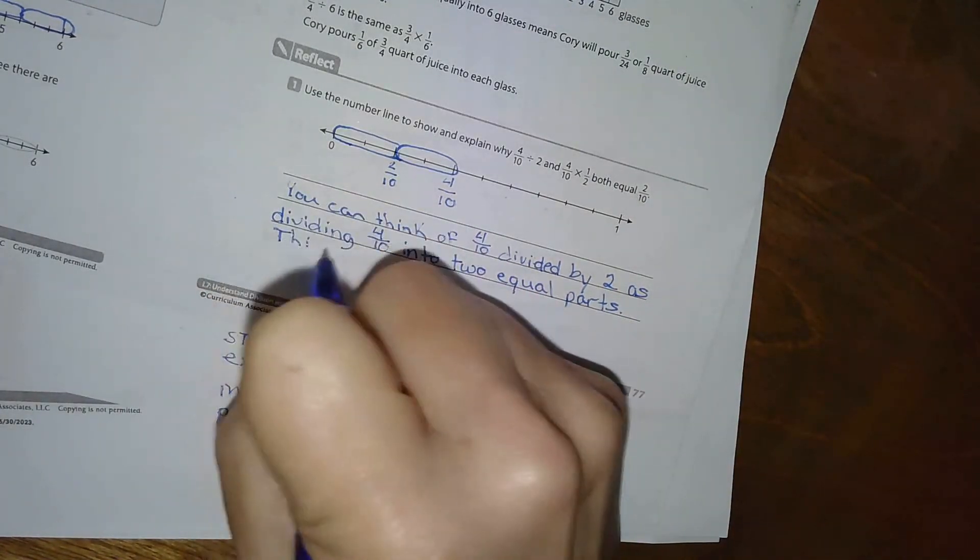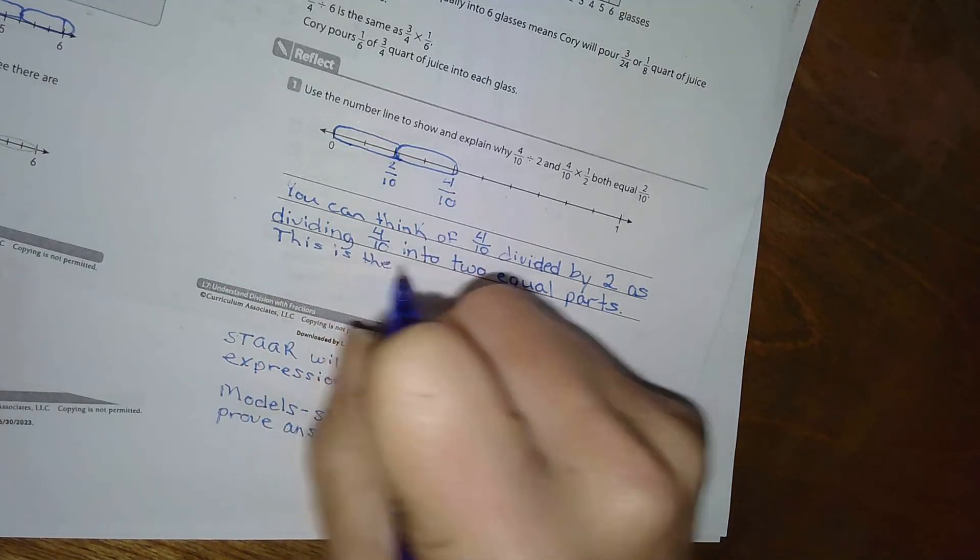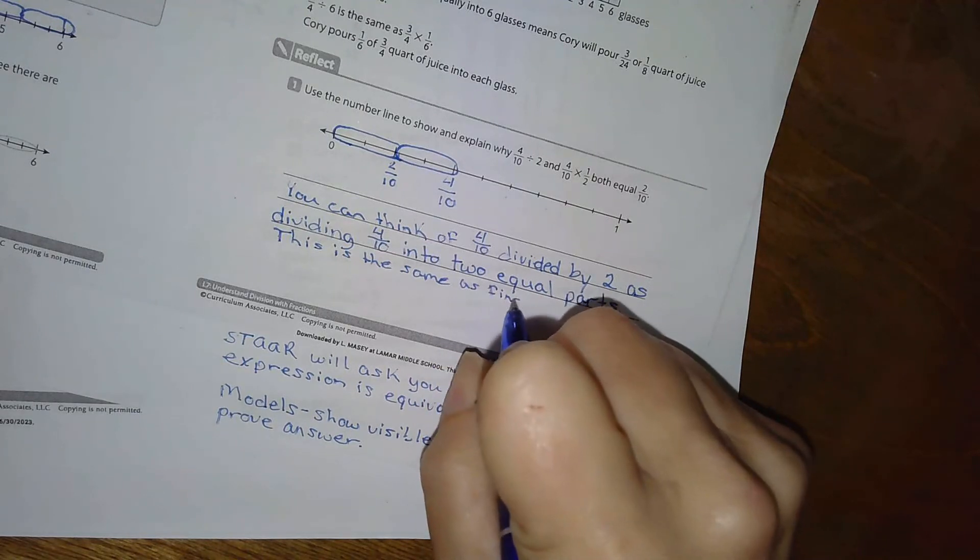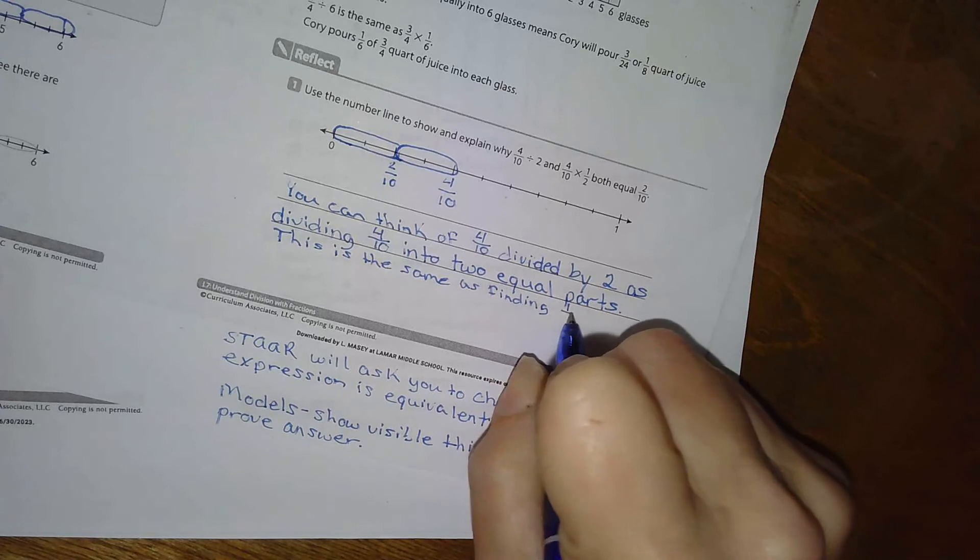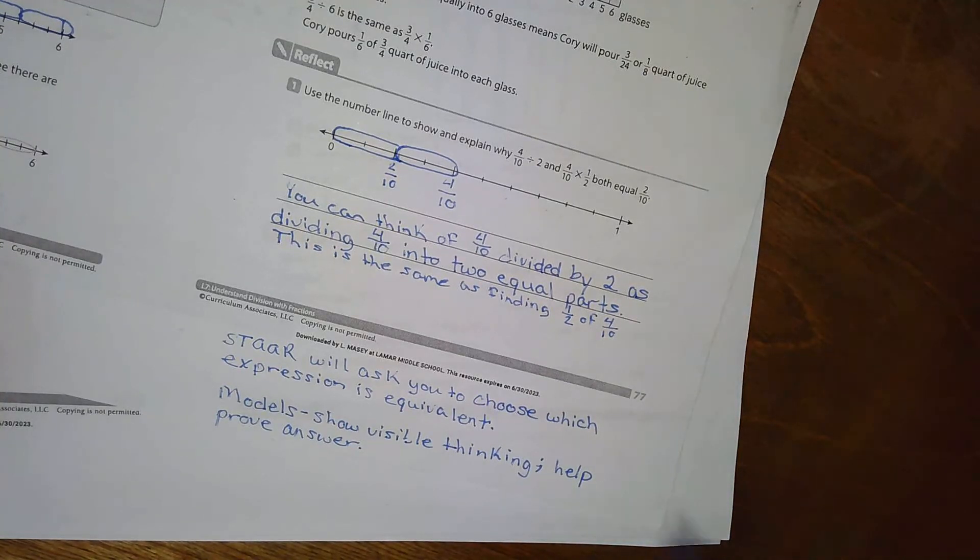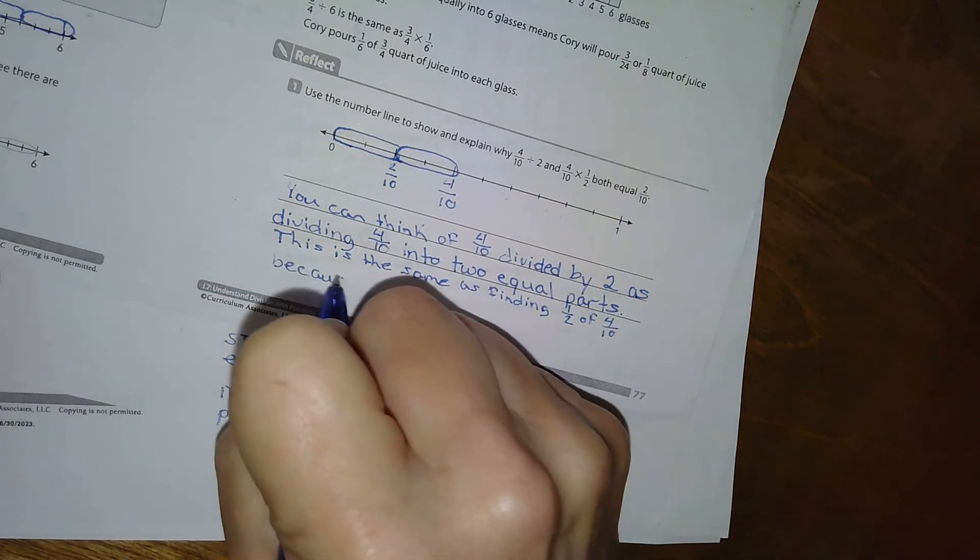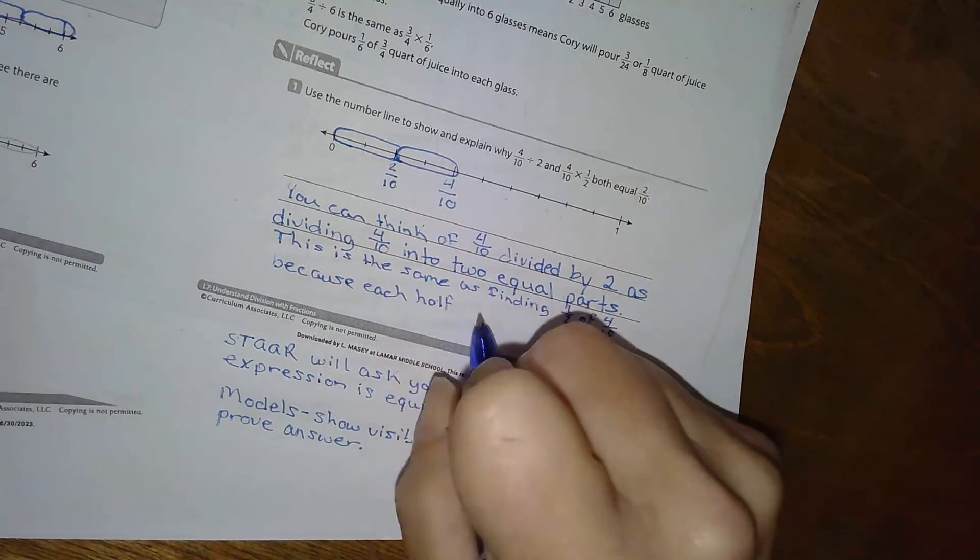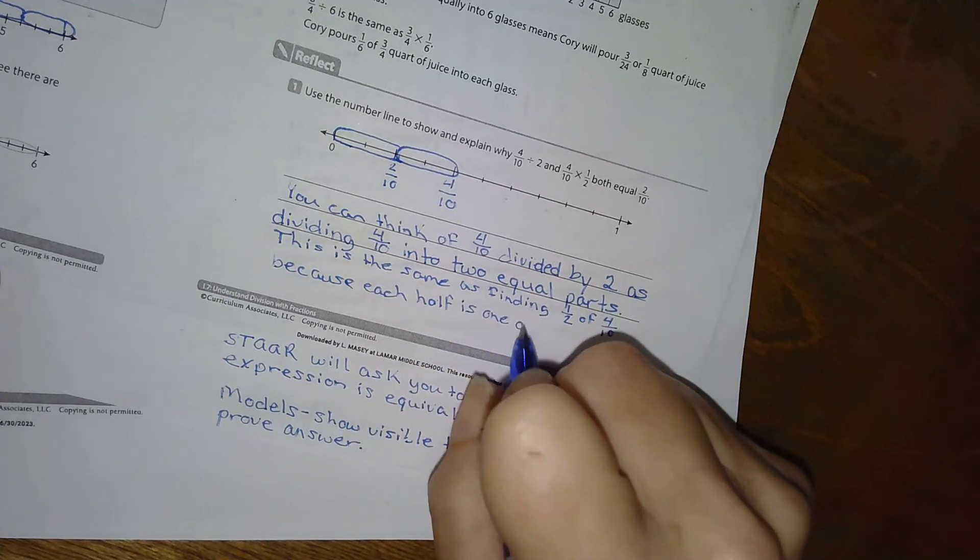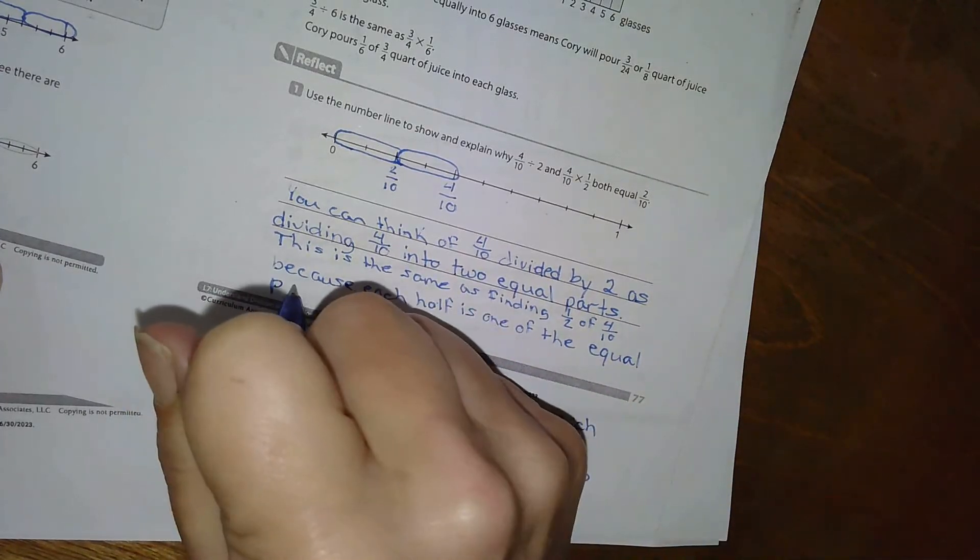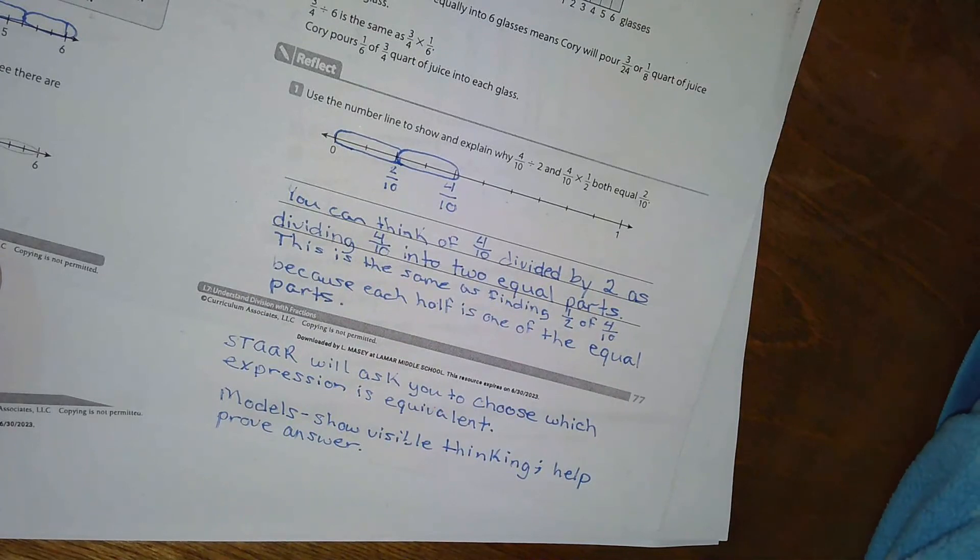Okay, this is the same as finding one-half of four-tenths because each half is one of the equal parts. Okay, and there we go.